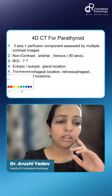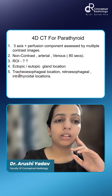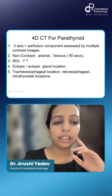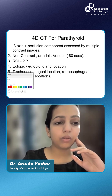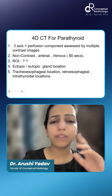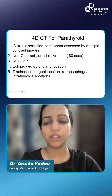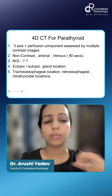You are taking one non-contrast, arterial, and venous phase. The delay for the venous is somewhere around 80 seconds. But why do we want to do that? Why don't we just do simple brain contrast imaging?